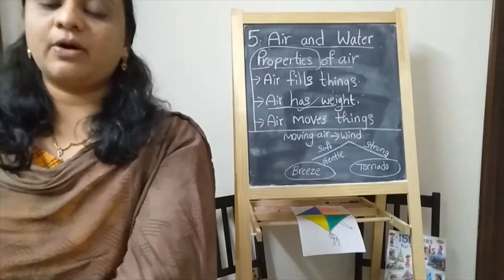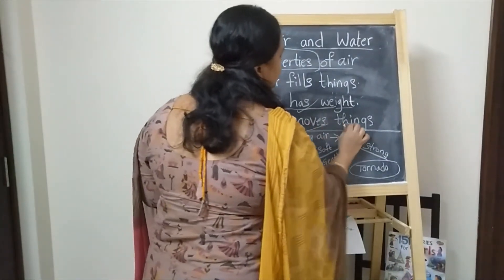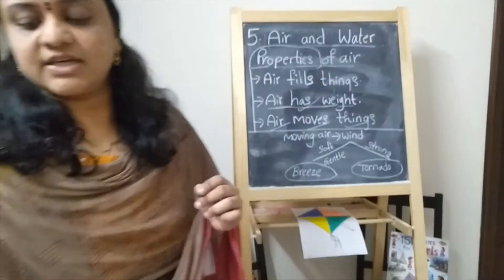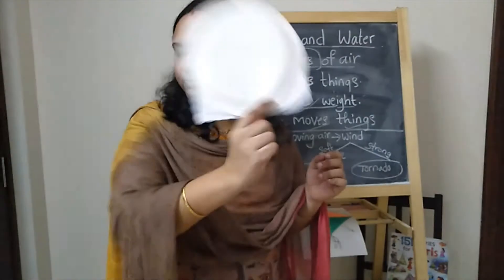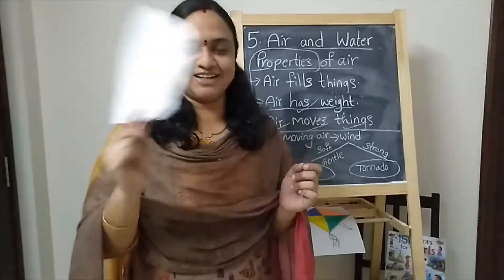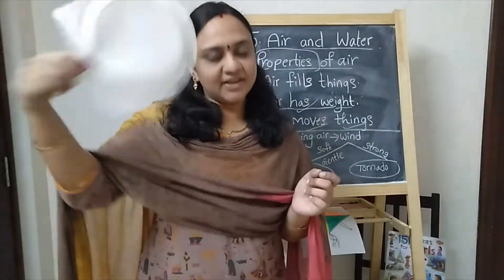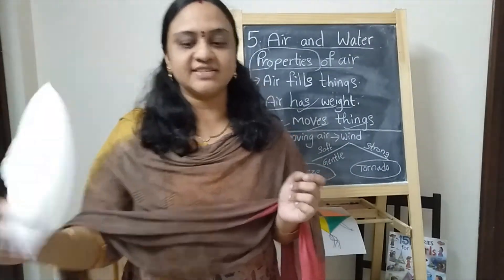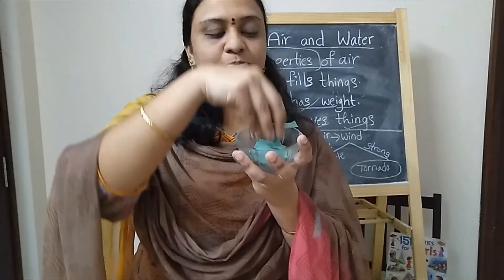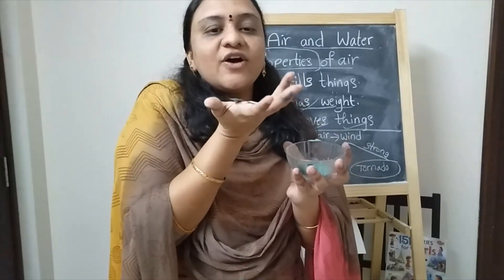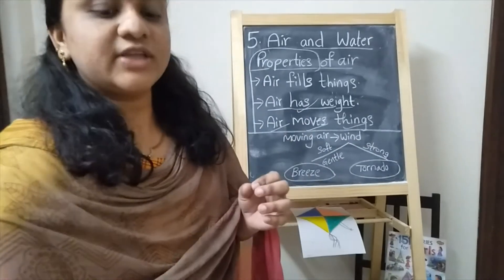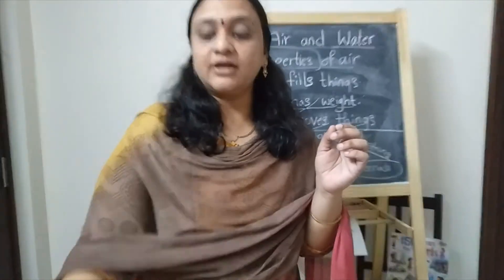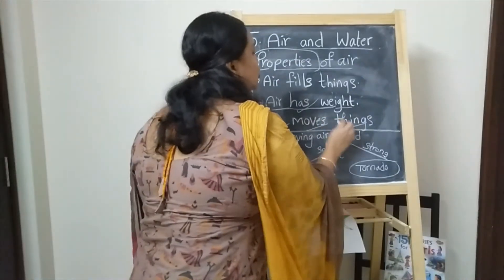Now teacher will talk about the third property: air moves things. This is a hand fan. See, if we move it like this — the air is moving my hair! See my hair is also moving when I do this. And see these tiny bits of paper — now if I take these pieces and blow, all the pieces fly away. So the air moves things. The air was moving my hair and the air was moving the bits of paper.